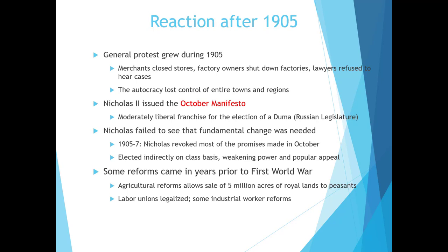Radical workers organized strikes and demonstrations. On January 22, 1905, over 200,000 marched to St. Petersburg under the auspices of a Catholic priest, Father Gapon, and demonstrated at the Winter Palace. The czar ordered palace guards to shoot — 130 were killed and hundreds wounded. Protests grew; merchants closed stores, factory owners shut down factories, and lawyers refused to hear cases. The autocracy lost control of entire towns and regions. Nicholas II then issued the October Manifesto, granting a moderately liberal franchise for the election of the Duma — the Russian legislature — but two years later he revoked his promises. Social reforms before World War One included agricultural reforms allowing sale of five million acres of royal lands to peasants, legalization of labor unions, and a few industrial worker reforms.